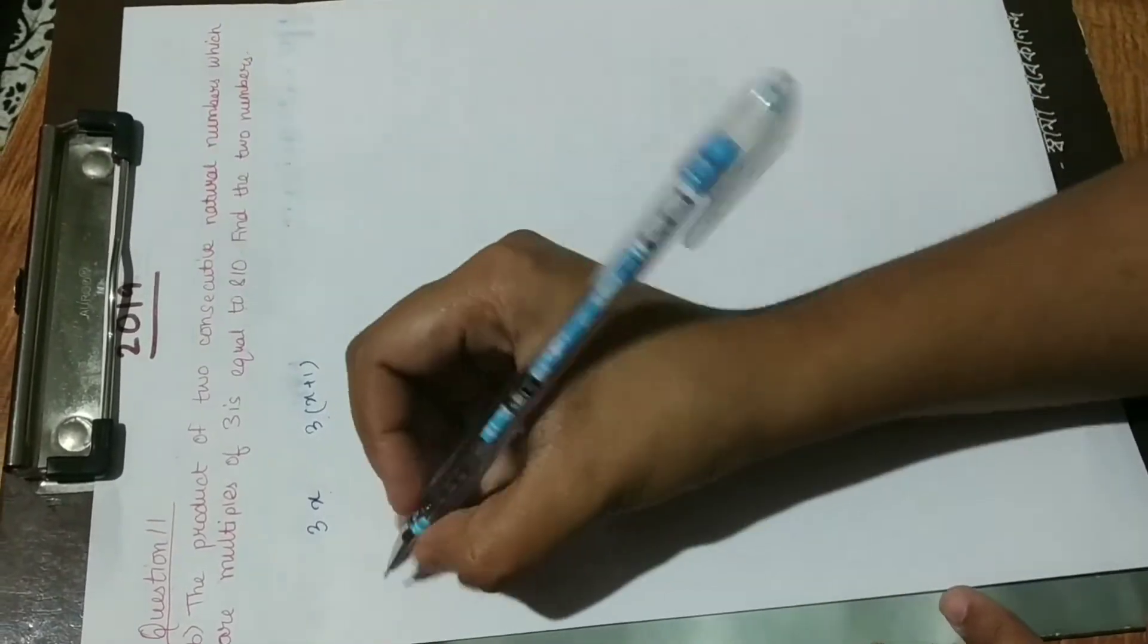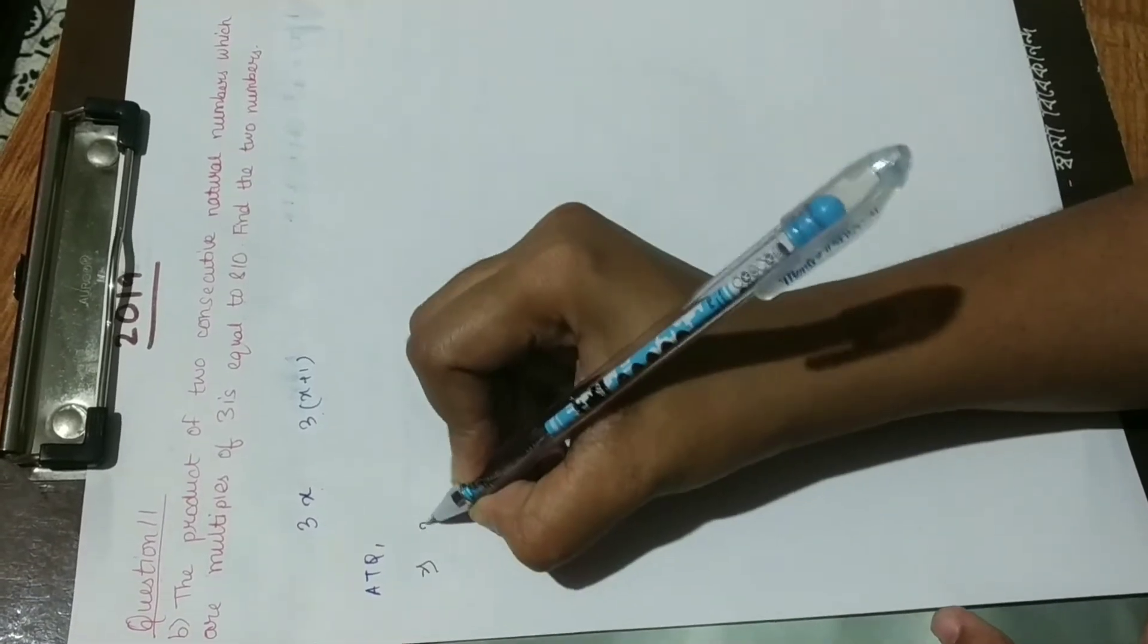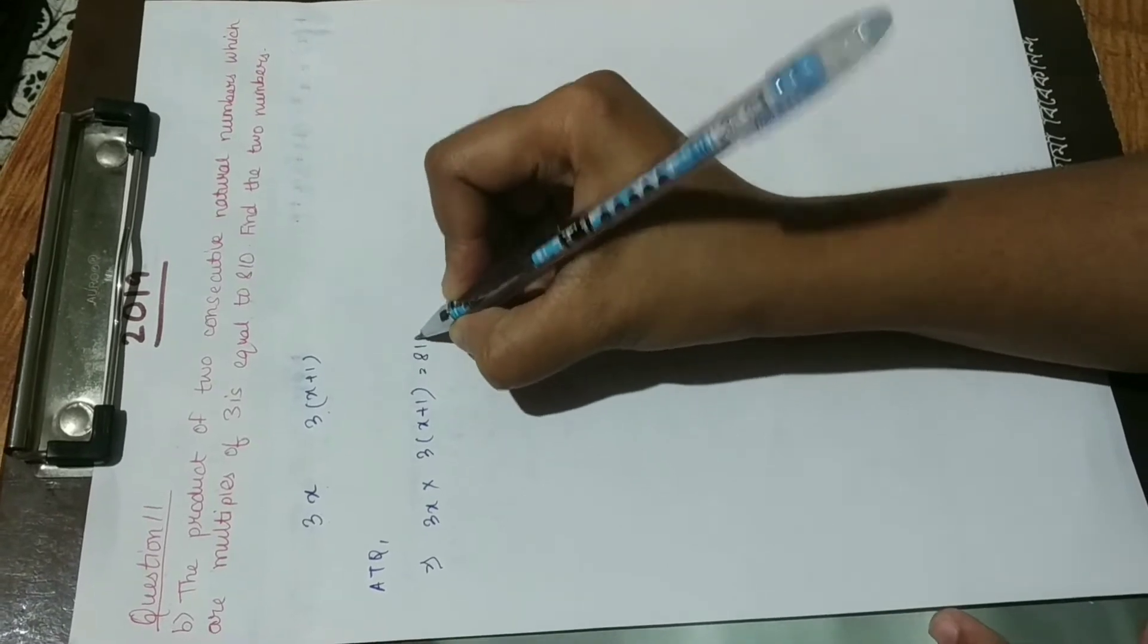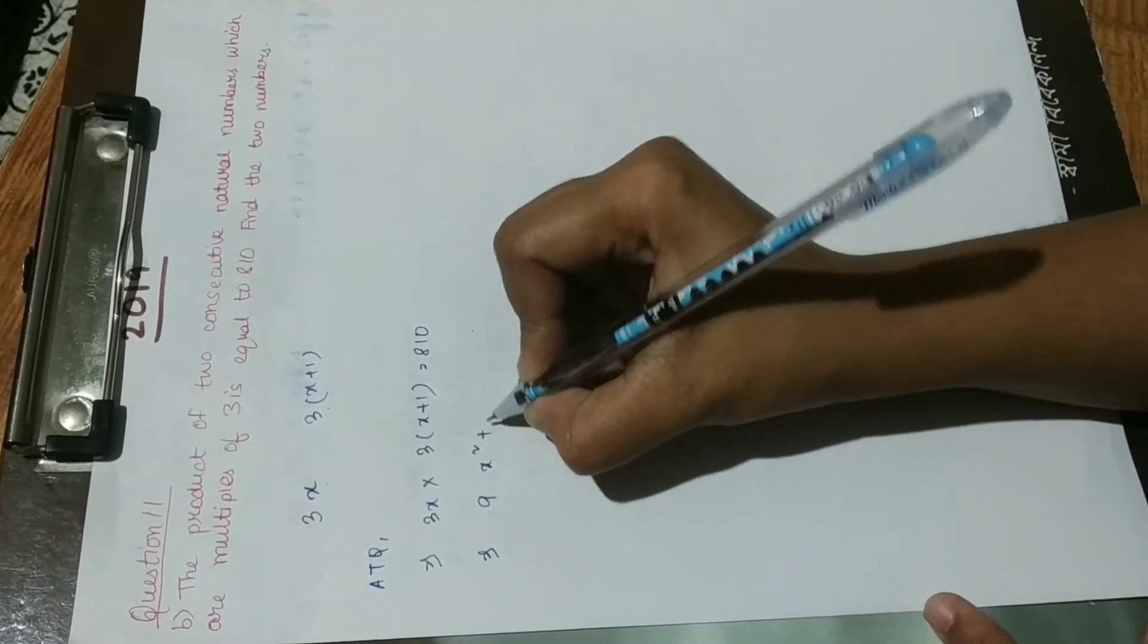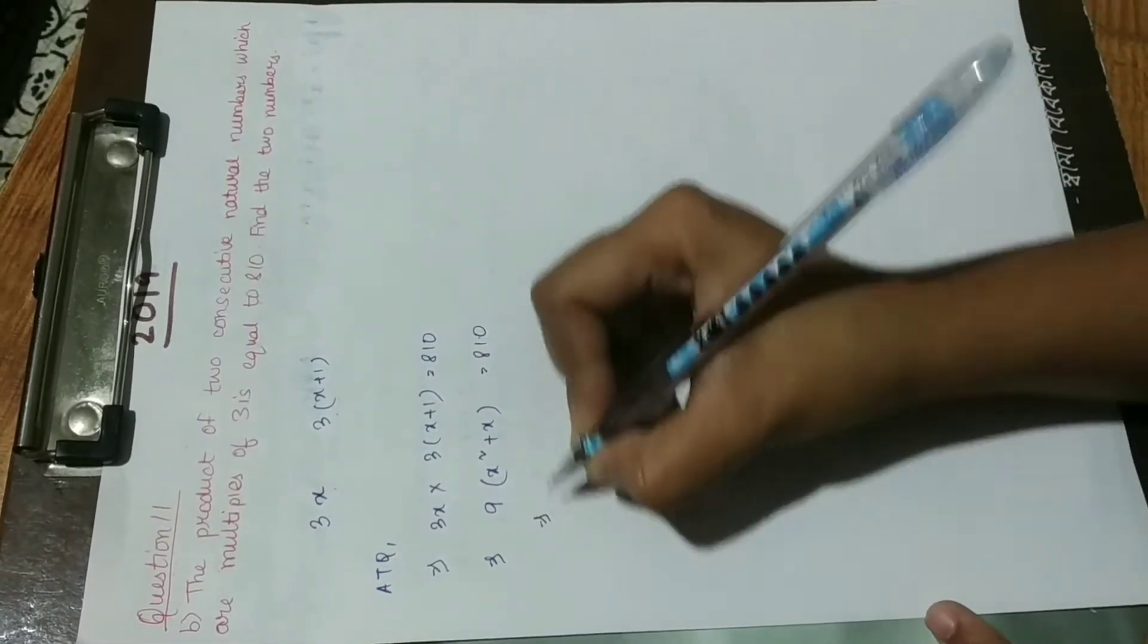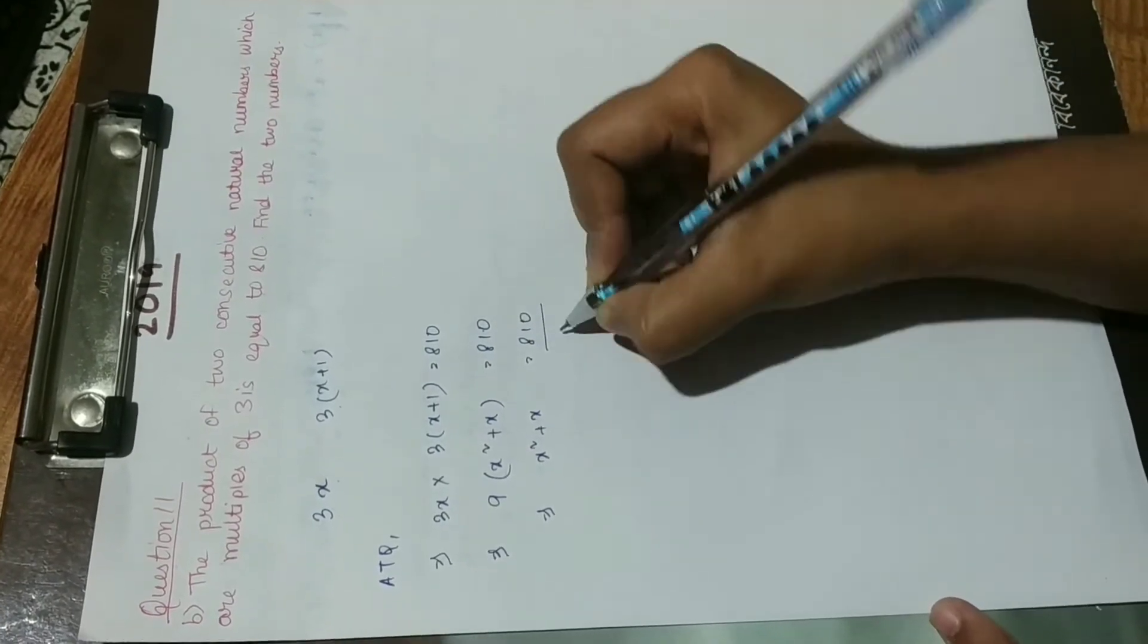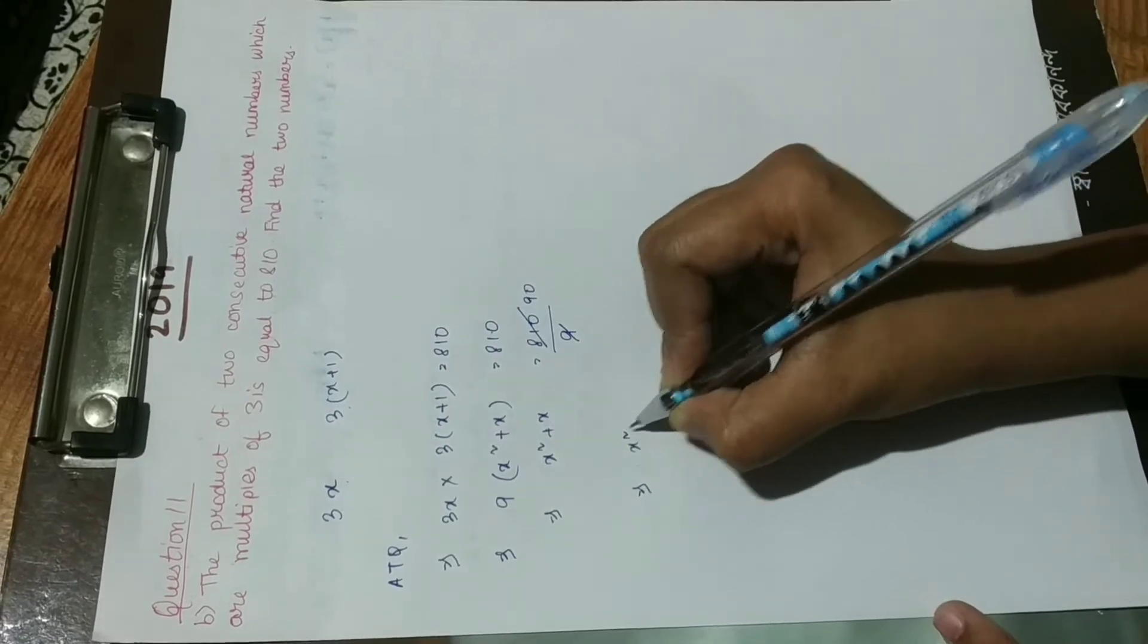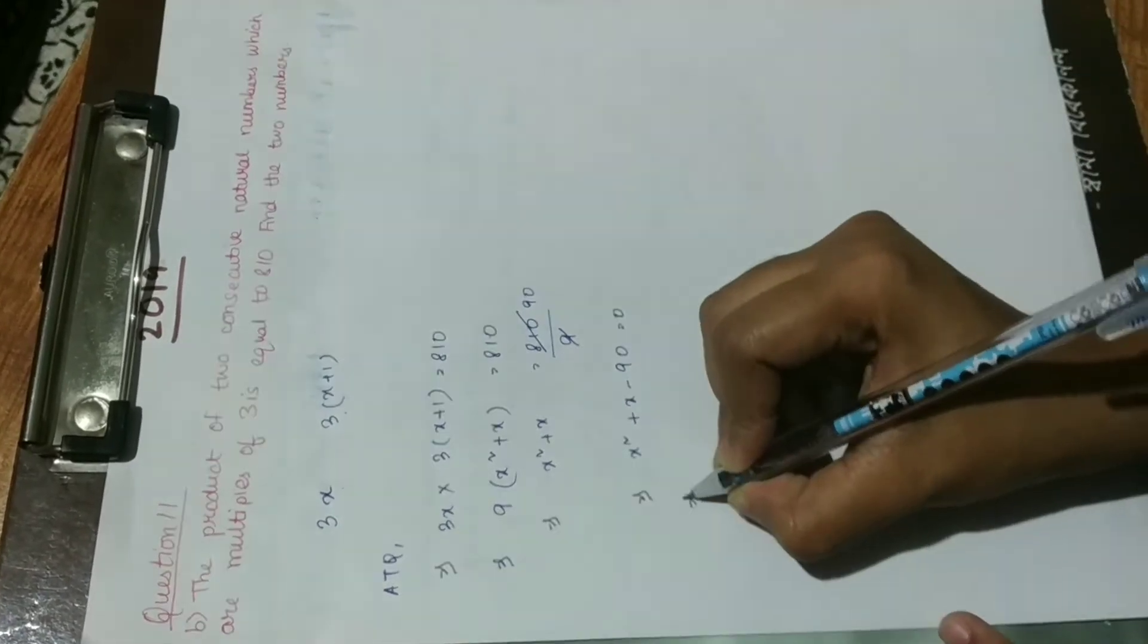So it's equal to 810. So x squared plus x minus 90 is equal to 0. So very simple.